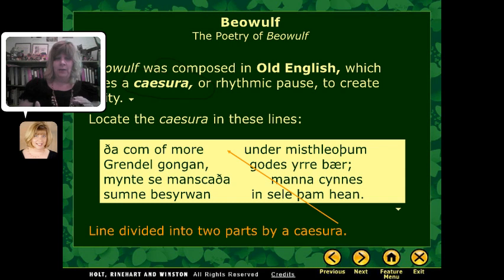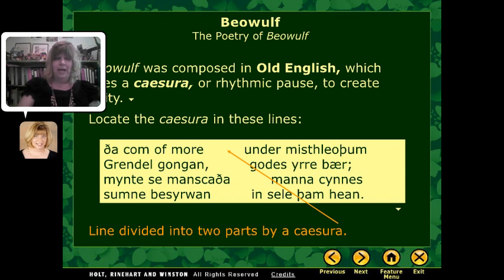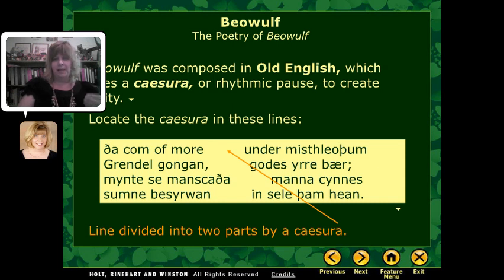So if you look at these lines — and these are in Old English, so even if you can't read them, you can see how they're separated. Notice how the line is divided into two parts. When the poet would recite them, they would always pause in between these two parts: 'a comma more... under missile bomb... Grendel gongen gar zibar.' You notice there would be that separation in between each line.